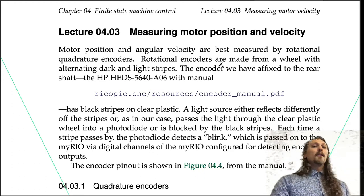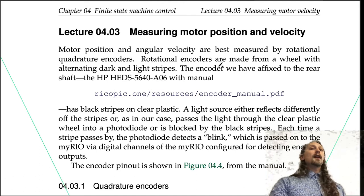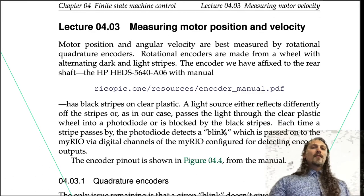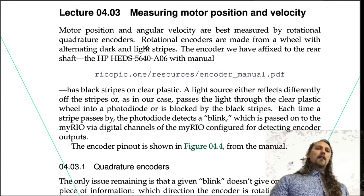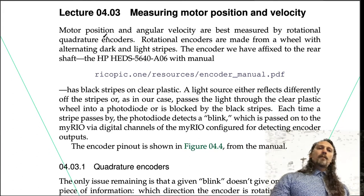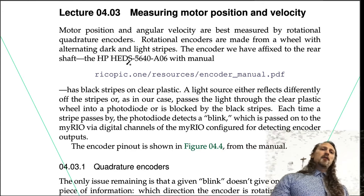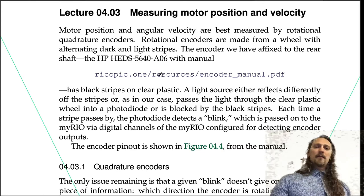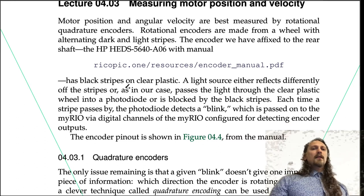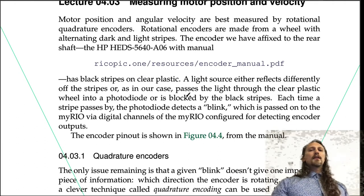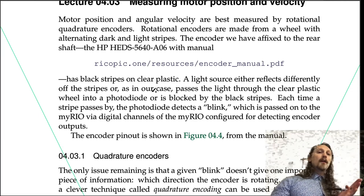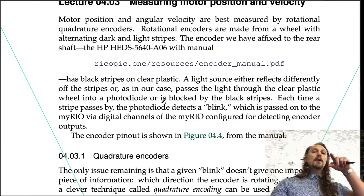Rotational encoders are made from a wheel with alternating dark and light stripes. The encoder we have affixed to the rear shaft of our motor is an HEDS model. The manual shows it has black stripes on clear plastic.